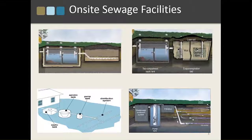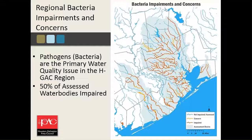Why are we interested in on-site sewage facilities? An OSSF is any system that collects, stores, separates, treats, and disperses wastewater on the same site in which that wastewater originated. There are many different types — conventional septic systems, aerobic systems that are pretty much mini wastewater treatment plants. The key is on-site: if it leaves the site and drains into a waterway, or doesn't get treated in the upper layers of the soil, it's contaminating the waters of Texas. This map illustrates all the bacteria-impaired streams we have in the region — bacteria is the number one pollution constituent here, with over 50% of assessed water bodies either impaired or having a concern for bacteria.